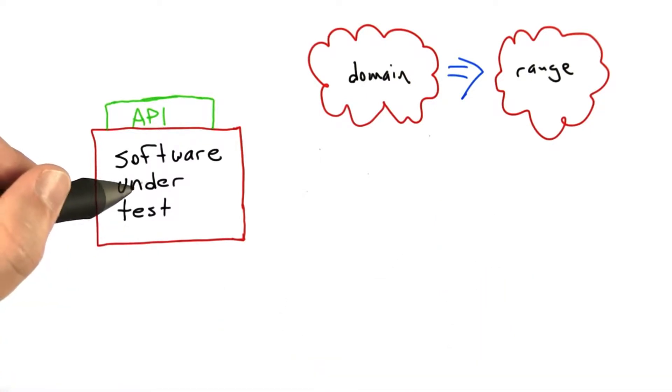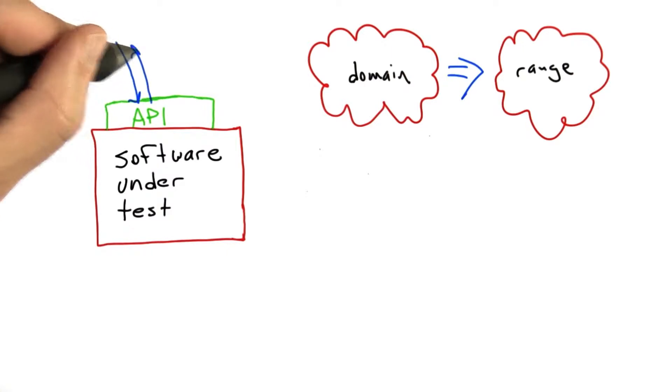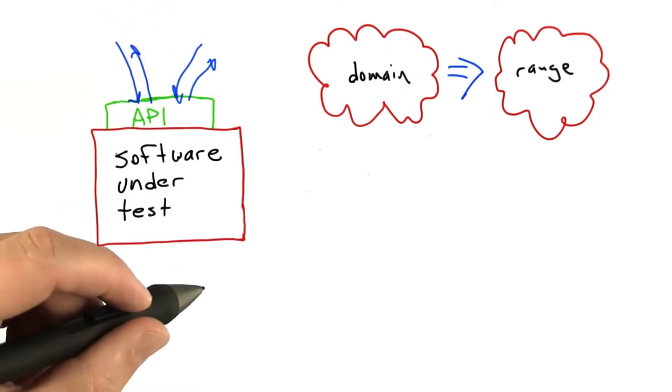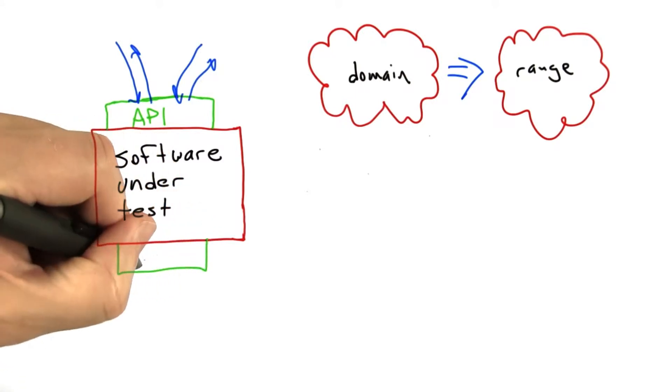So overall, testing software by calling into the APIs that it provides is fairly straightforward. We just make calls into the API and look at the results. But something inconvenient about real software is that software doesn't just provide APIs. It also uses them.